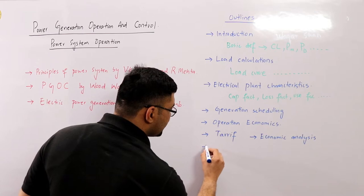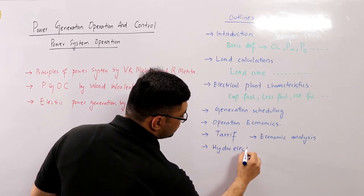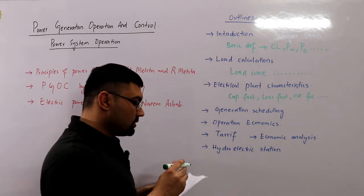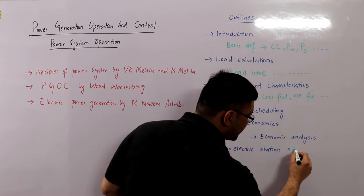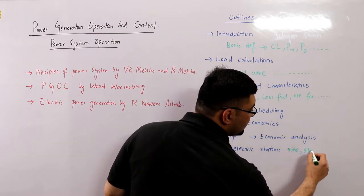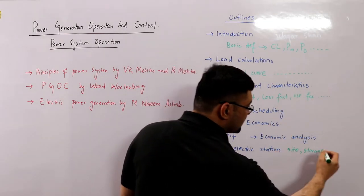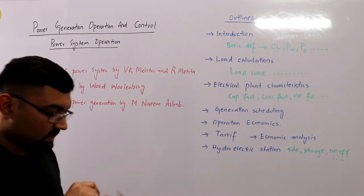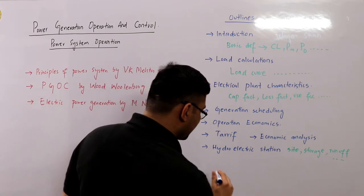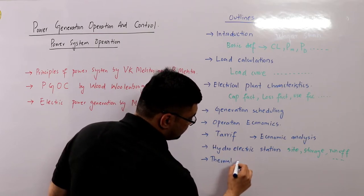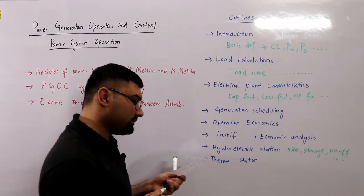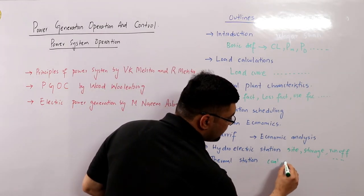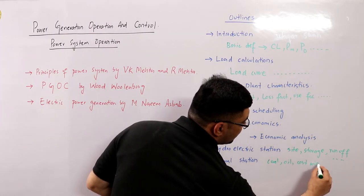We then talk about hydroelectric stations, covering site considerations, storage dams, storage hydro power stations versus run-of-river stations. After that we cover thermal power stations — coal-fired, gas-fired, and oil-fired — and discuss the cost minimum function for these plants.